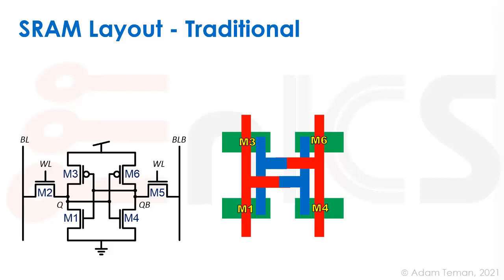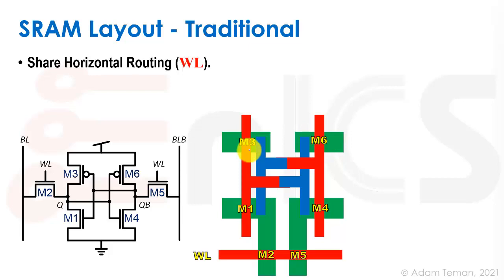So M1 and M3 you can see over here, and M4 and M6 over here. We have our poly gate that's going to be driving them, and our Q and Q bar with the transistor diffusions. Here we're going to add extended diffusions of M1 and M4.